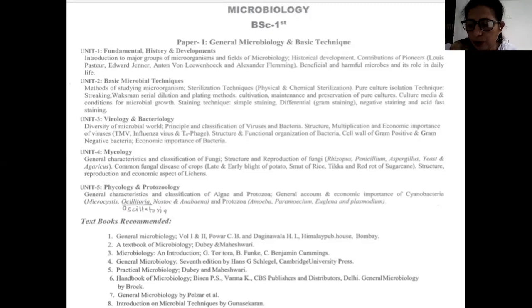How you have to proceed for your microbiology papers. So this microbiology course consists of two papers, paper one and paper two. Paper one is the general microbiology and basic techniques, and paper two is the biochemistry. Paper one general microbiology and basic techniques includes five units, and paper two also includes five units. In continuation with that, we have a practical for yourselves including both paper one and paper two.